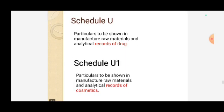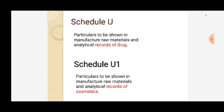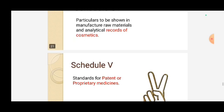Schedule U covers particulars to be shown in manufacturing raw materials and analytical records of drugs. Schedule U is the record for drugs, and Schedule U1 is the record for cosmetics — just a slight difference between the two.